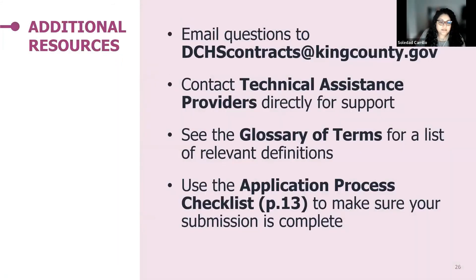If any additional questions come up throughout the process of gathering your submissions, you can email Joanna at dchscontracts@kingcounty.gov. If you're seeking technical assistance, you can contact the providers directly for support. Within the RFQ, there's also a glossary of terms listing relevant definitions, and on page 13 there's an application process checklist that would be very helpful in ensuring your submission is complete.